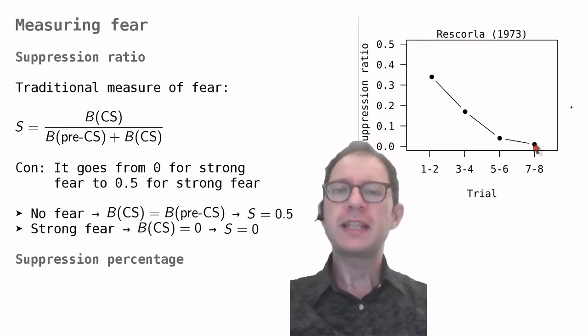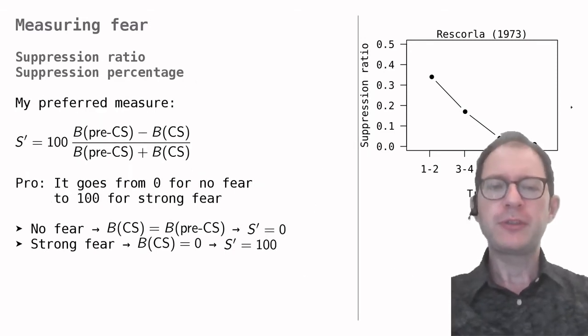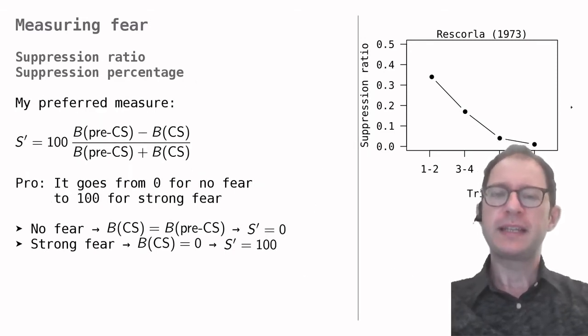We would like a measure that shows that our index of learning goes up as the animal learns. I like to use an alternative measure that I call the suppression percentage. It works as follows. It still uses the same two measures, the rate of the behavior before and during the CS, but these are combined a bit differently. The result is that now 0% means no fear, and 100% means a fear so strong that stops all ongoing behavior.